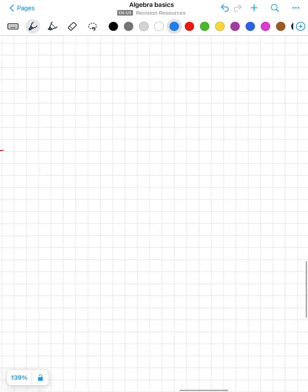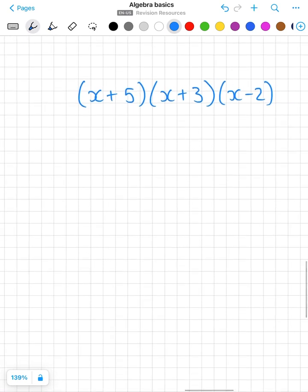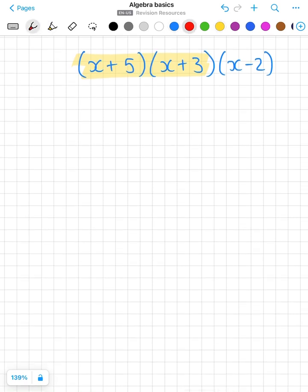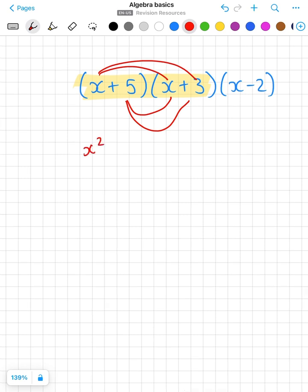We may see triple brackets. My suggestion would be to multiply out your first two brackets as we've just done, how we would expand double brackets. So x squared plus 5x plus 3x plus 15, and then simplify that: x squared plus 8x plus 15.